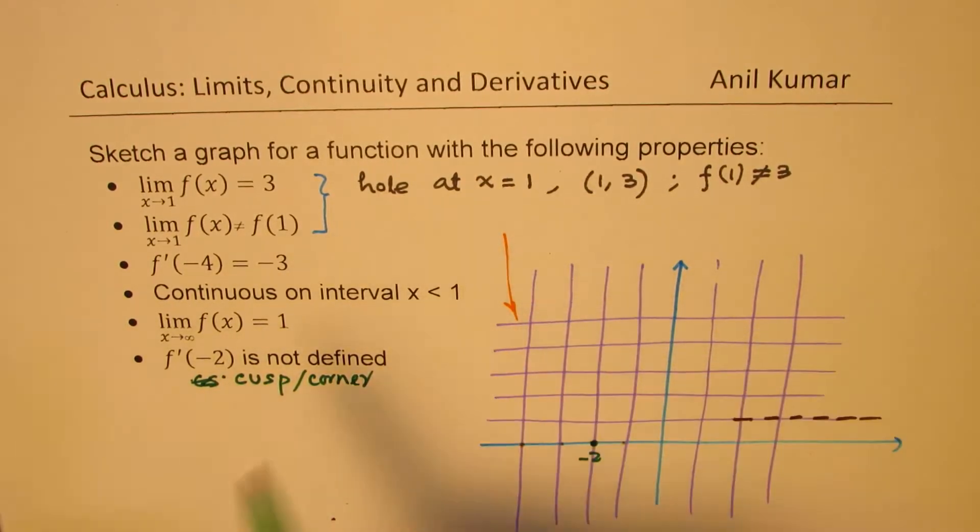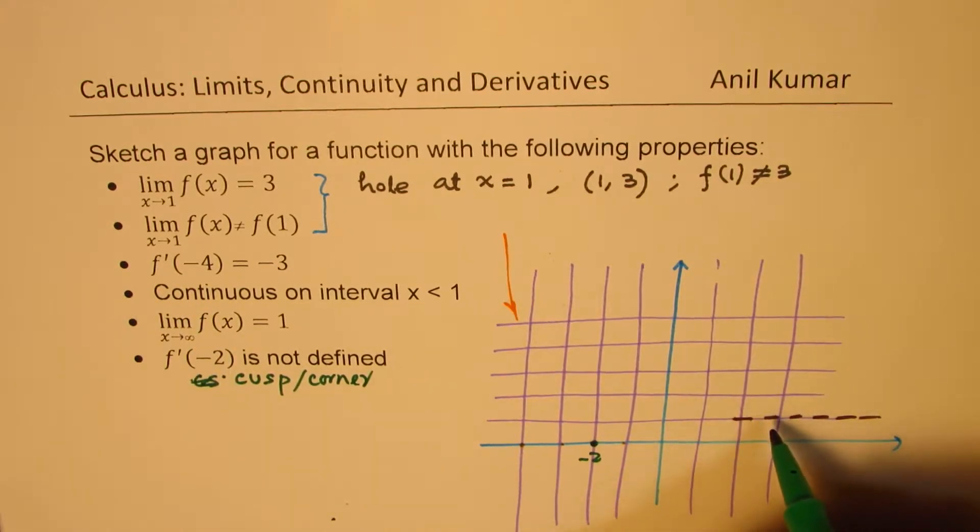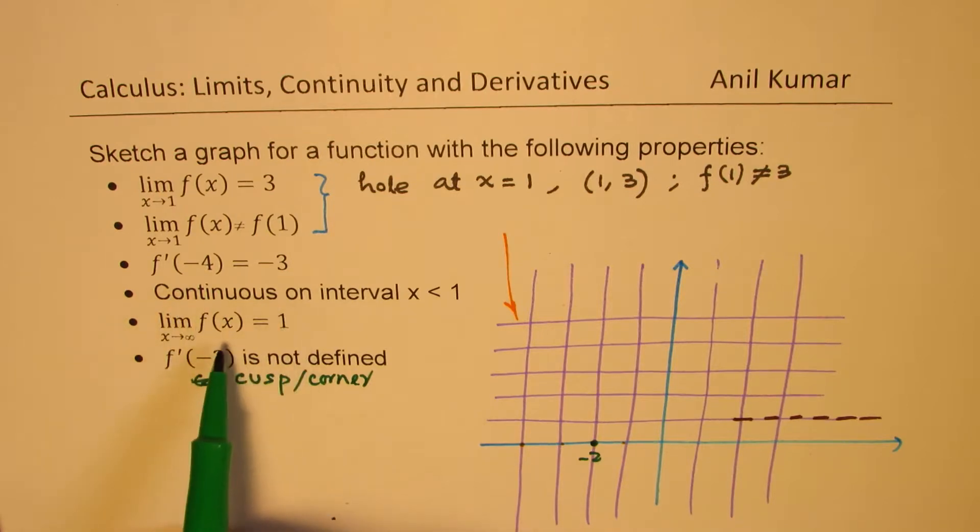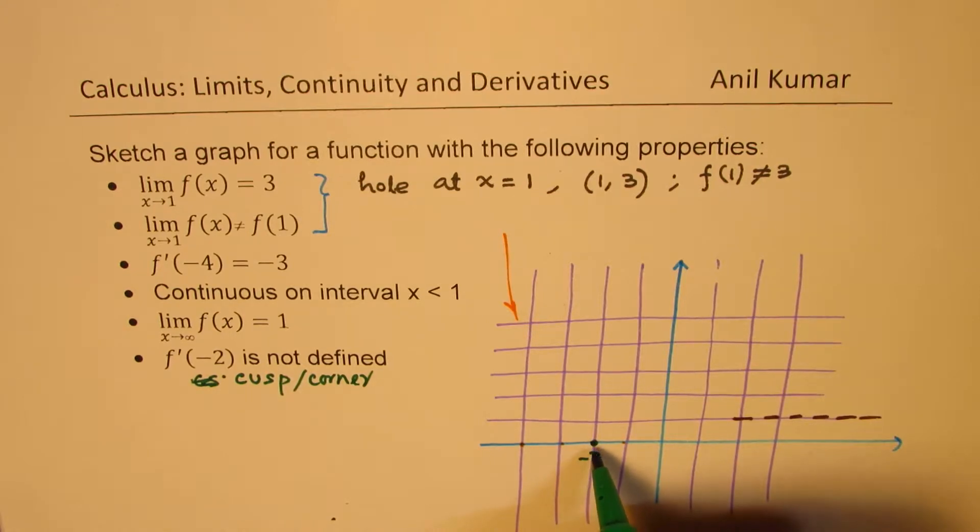So now, once again, on this side, we know we have to approach. We could approach from bottom or from top either way. On the left side, we are given two conditions. At minus 2, it is not defined. So we are expecting a corner or a cusp here.